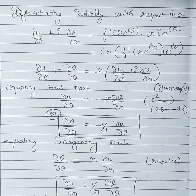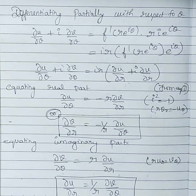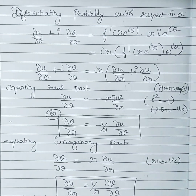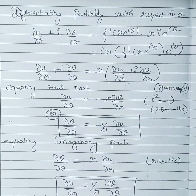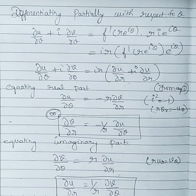You can go for the first proof as it is similar to Cartesian. In case you find it tough, then you can go for this shorter version.